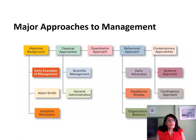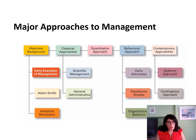Let's now look at the major approaches to management. Classical approaches are theories and concepts on analysis that synthesise workflows. The main objective of classical approaches is to improve economic efficiency, especially in labour — effectively, how do we make people more productive? The next approach is the quantitative approach, which uses statistics and computer simulations to improve decision making. In other words, how can we use numbers to make better decisions?